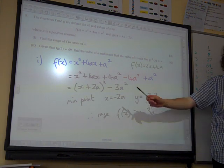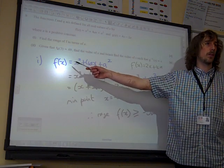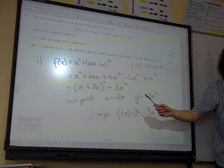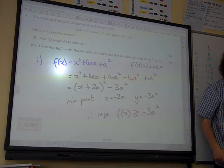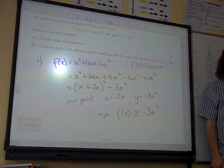Of course, if this had been a negative coefficient of x squared, all you would have done at the end here is change this round so it's less than or equal to, because that would have been a maximum point. Are we happy with that?